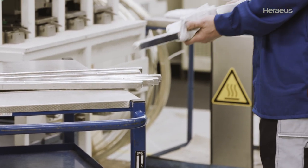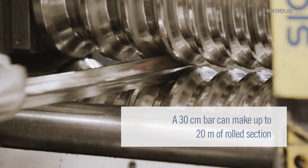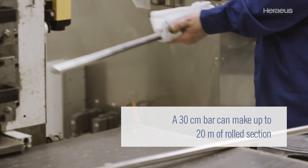Subsequently, the bar is rolled. A 30 cm bar can make up to 20 meters of rolled section.